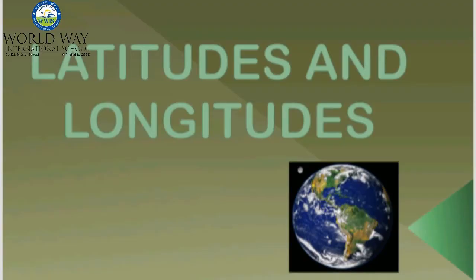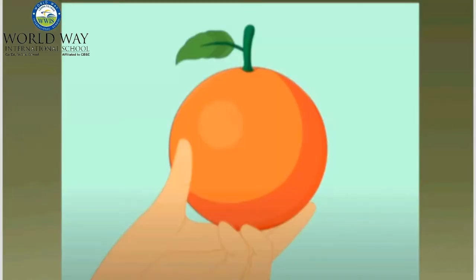Latitudes and longitudes — this is an orange, and I think our Earth also has a similar shape to an orange: flat from both sides, that is on the south and the north, and spherical from the sides. Now if you are going to draw imaginary lines both horizontally and vertically, how will it look? Let's see.